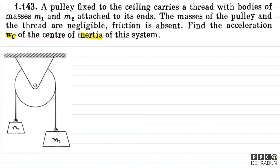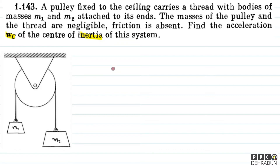Let's look at the question. Basically, it is an ideal pulley and it carries a thread with bodies of masses M1 and M2 attached to its ends. The pulley and thread mass are negligible and friction is absent. We have to find the acceleration Wc vector — the center of inertia of the system.